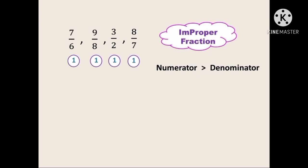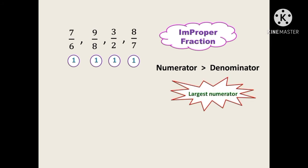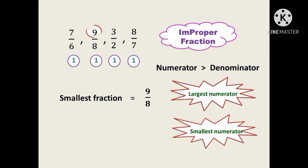In the case of a proper fraction, the fraction with the largest numerator is the largest fraction and the smallest numerator gives the smallest fraction — that is in a proper manner. But for an improper fraction, it is the opposite: the largest numerator gives the smallest fraction and the smallest numerator gives the largest fraction. So in this example, to find the smallest fraction, find the largest numerator, which is 9, so the smallest fraction is 9 by 8. The largest fraction has the smallest numerator 3, so the largest fraction is 3 by 2.